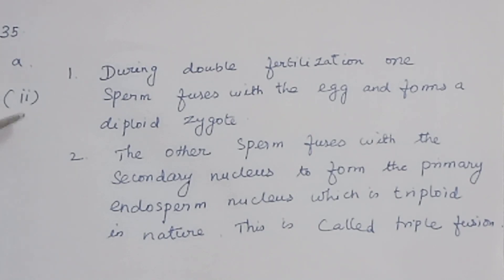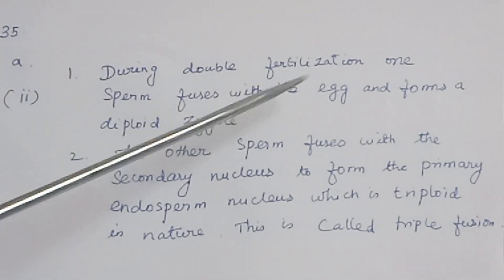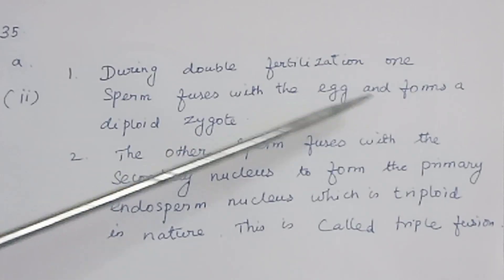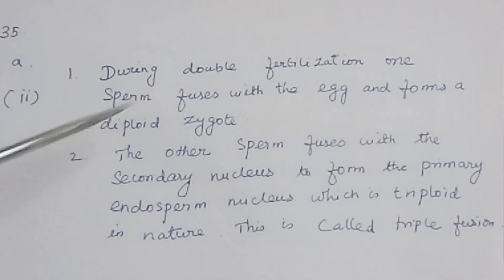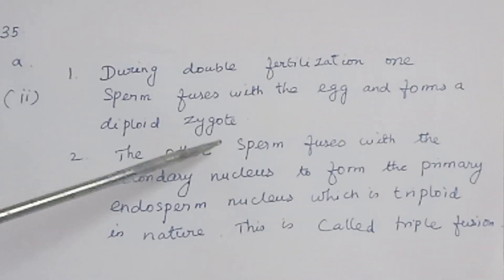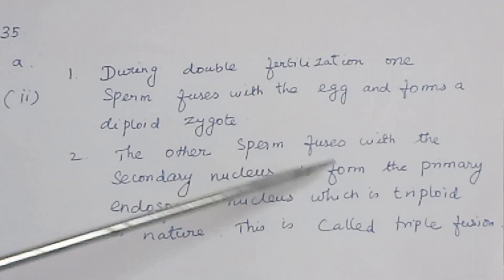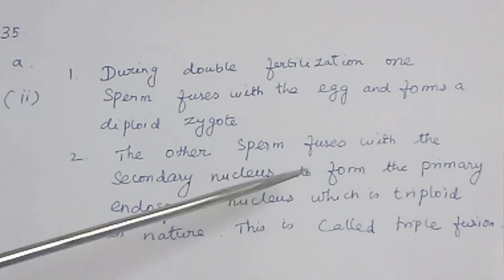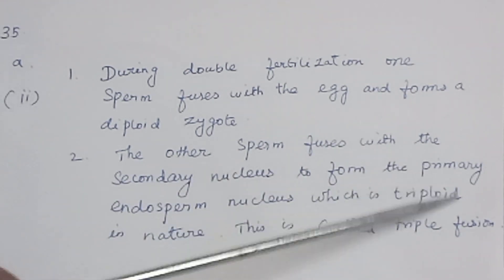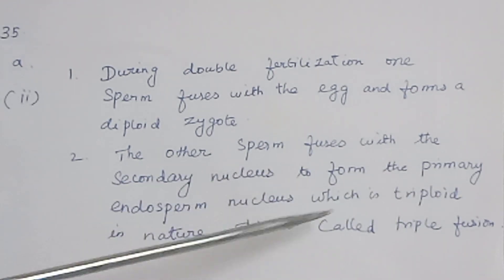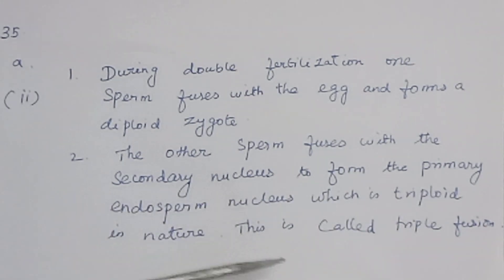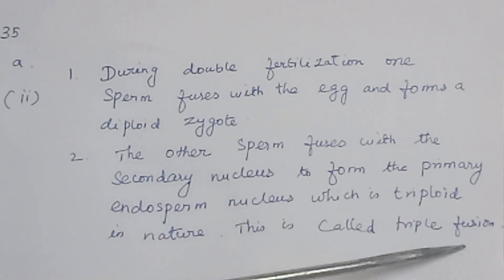Question 35: Define triple fusion. During double fertilization, one sperm fuses with the egg and forms a diploid zygote. The other sperm fuses with the secondary nucleus to form the primary endosperm nucleus, which is triploid in nature. This is called triple fusion.